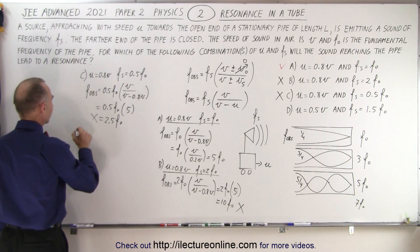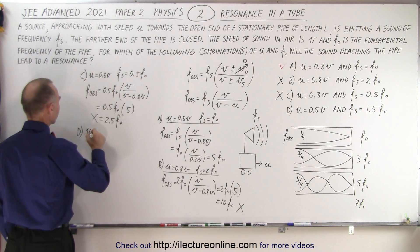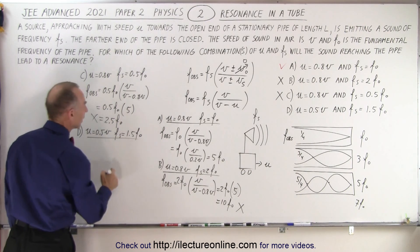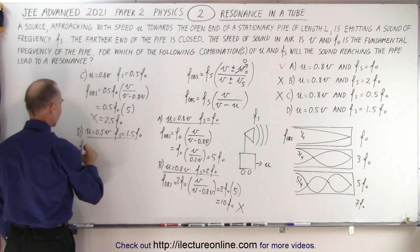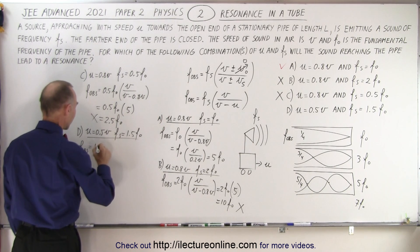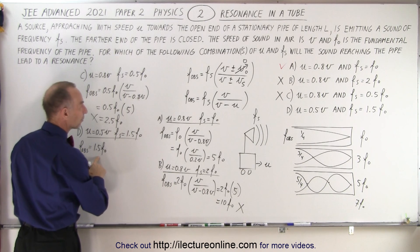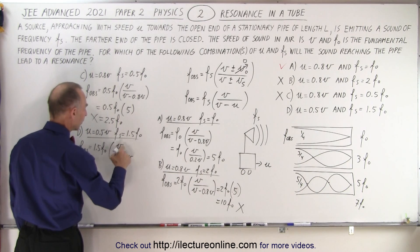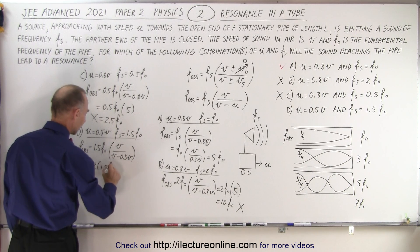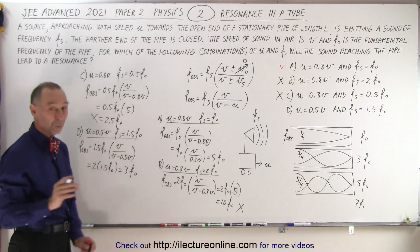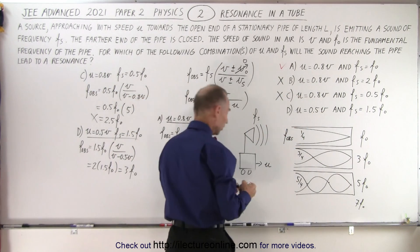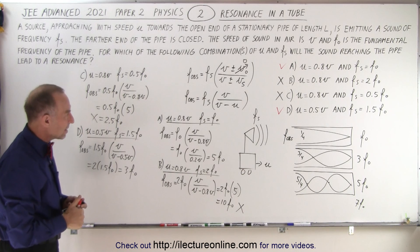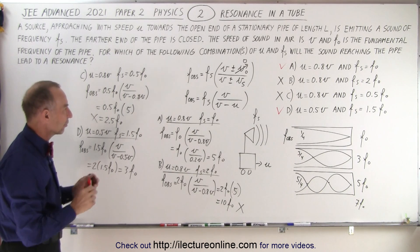For answer D: u equals 0.5v and f sub s equals 1.5 times the fundamental frequency. Plugging in, f observed equals 1.5f sub nought times v divided by (v minus 0.5v). Since 0.5v goes into v twice, that gives 2 times 1.5f sub nought, which equals 3f sub nought — and 3 times the fundamental frequency is indeed one of the possible resonance options. So answer D is correct. We have two correct answers: A and D. B and C do not give resonance frequencies.